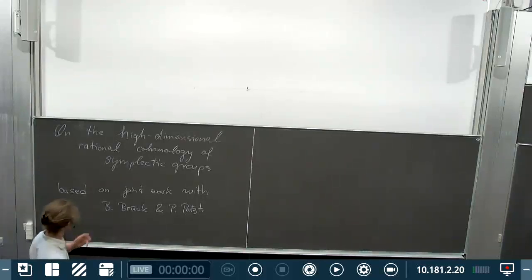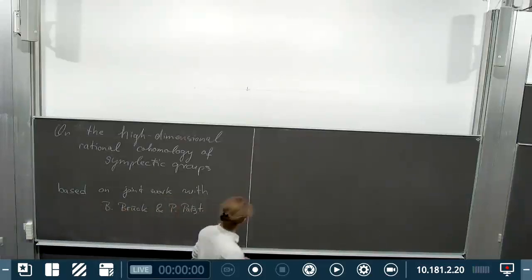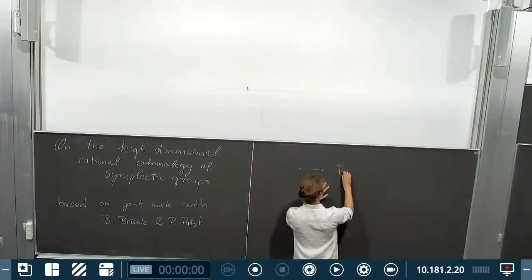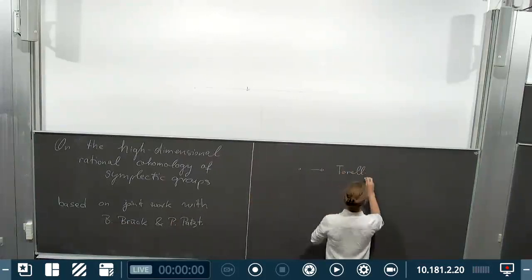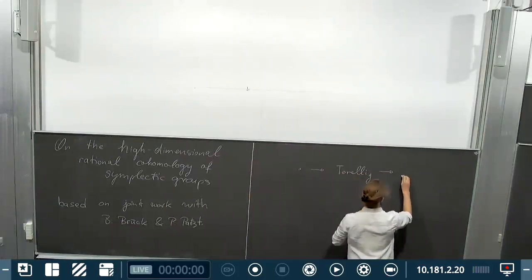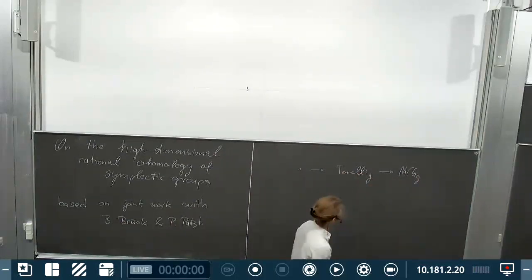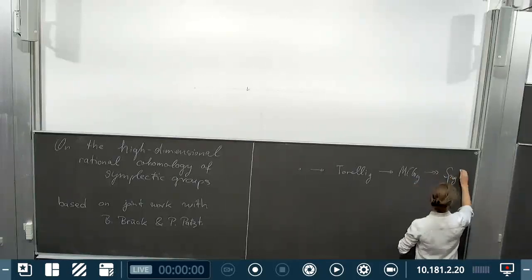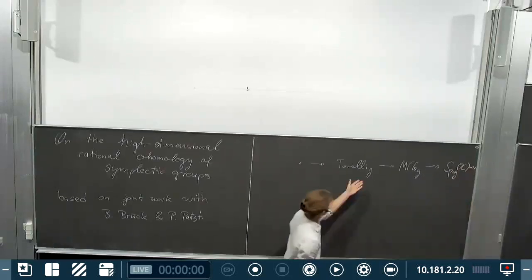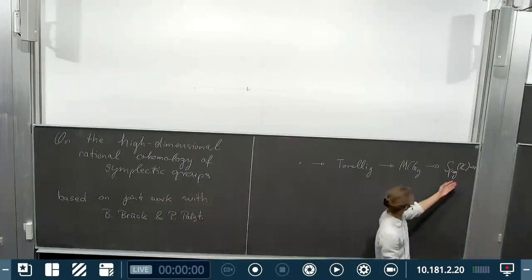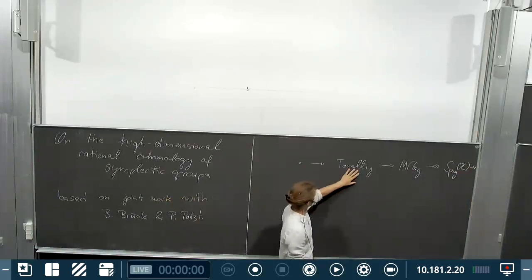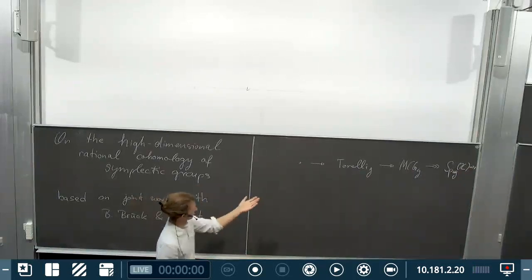Before I give a definition of the symplectic groups and give a general introduction, I would like to point out two places in which symplectic groups show up. The first one is in low-dimensional topology, namely there's a short exact sequence of groups that starts with the Torelli group, then goes into the mapping class group of an orientable surface of genus g, and then this projects onto the symplectic group Sp(2g) over the integers.